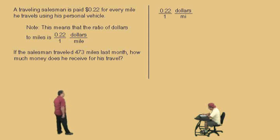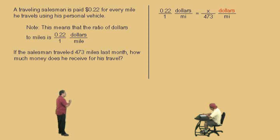Okay, so we'll go ahead and write our first ratio, .22 dollars over 1 mile, okay? And x is on top because we're looking for the dollar amount, right? And we put 473 miles on the bottom because that's how many miles he traveled, right? And so, notice the units match up, we write a proportion problem, and we do what, Charlie?